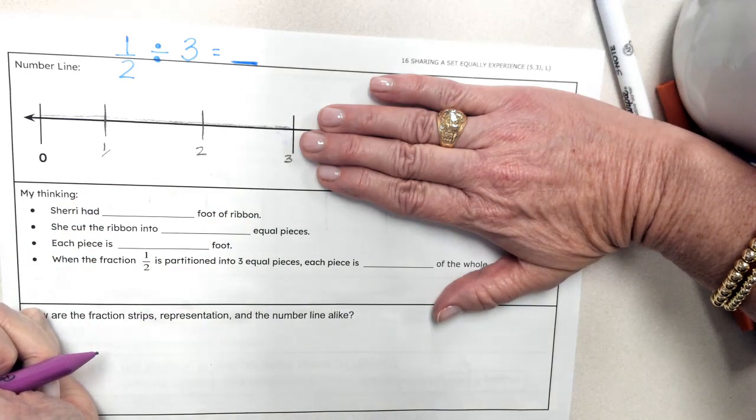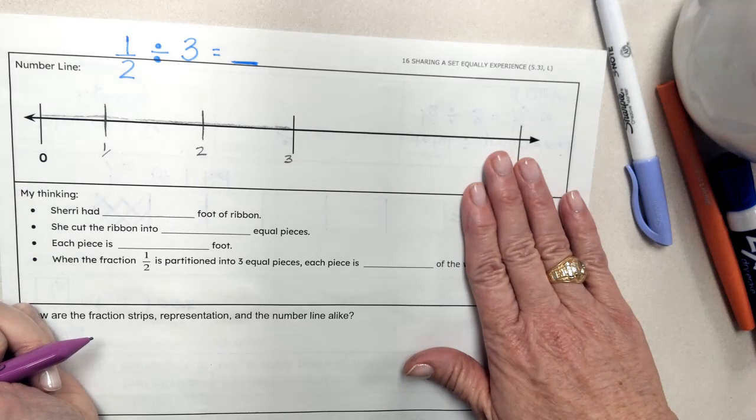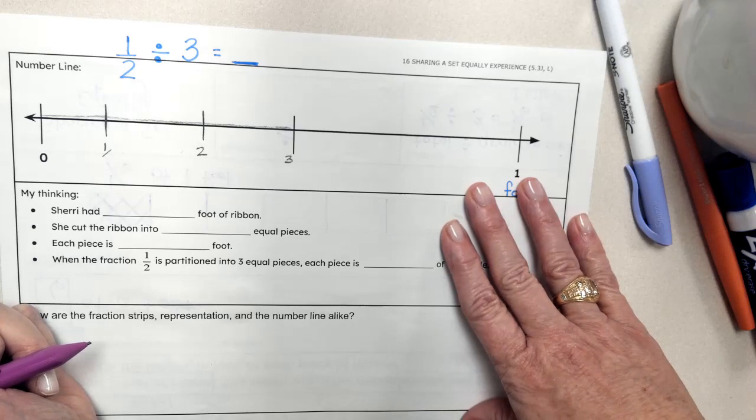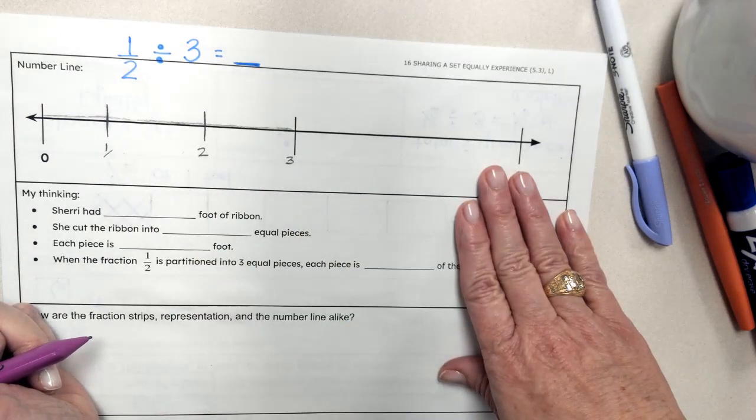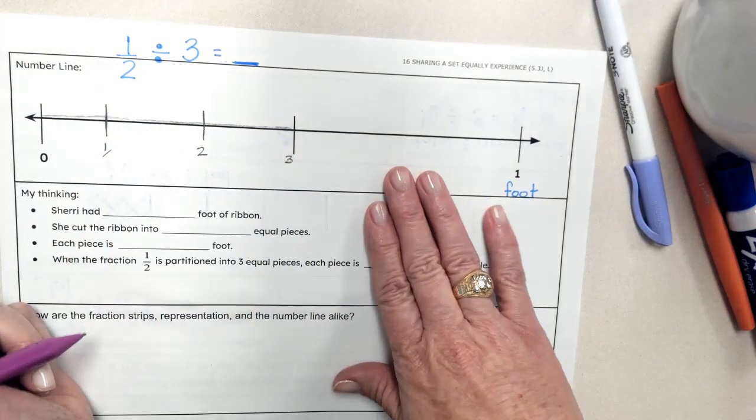Now remember, when I uncover, I have a whole section that hasn't been divided. So what do I have to do to the other part of my number line? Well, I have to divide it the same amount. So the other half, we're going to divide it into three pieces.